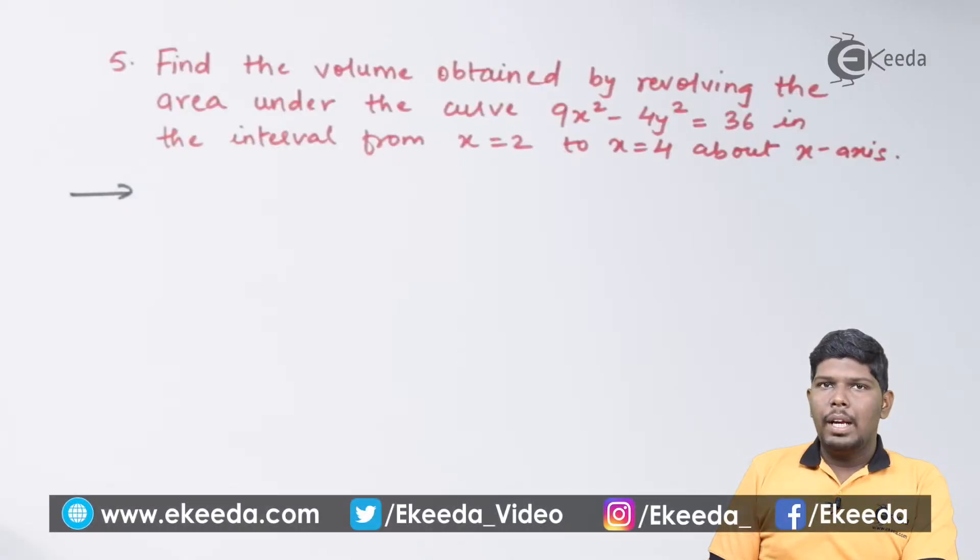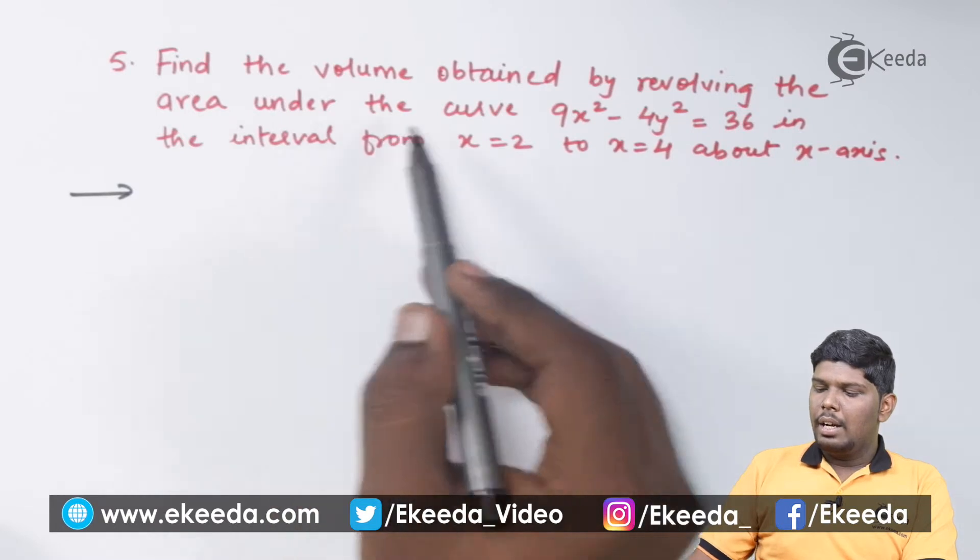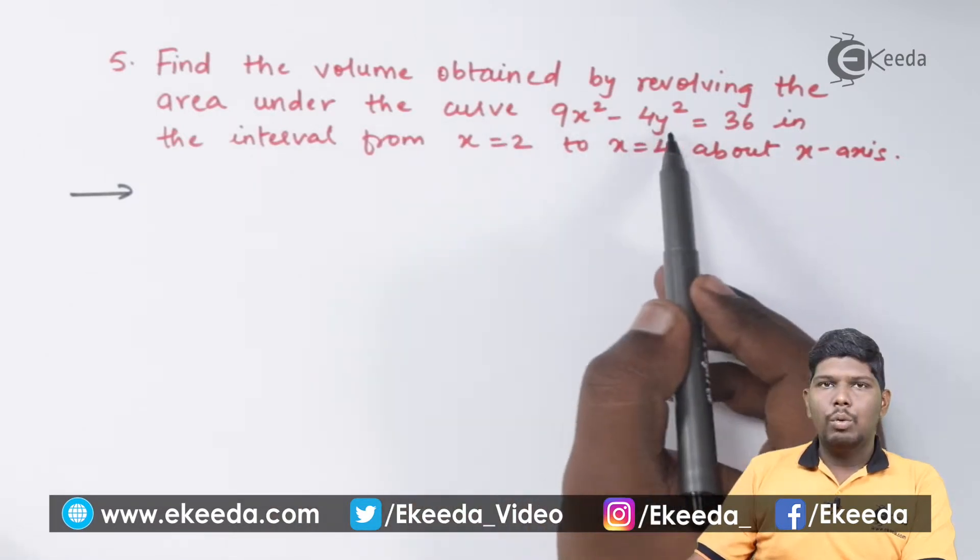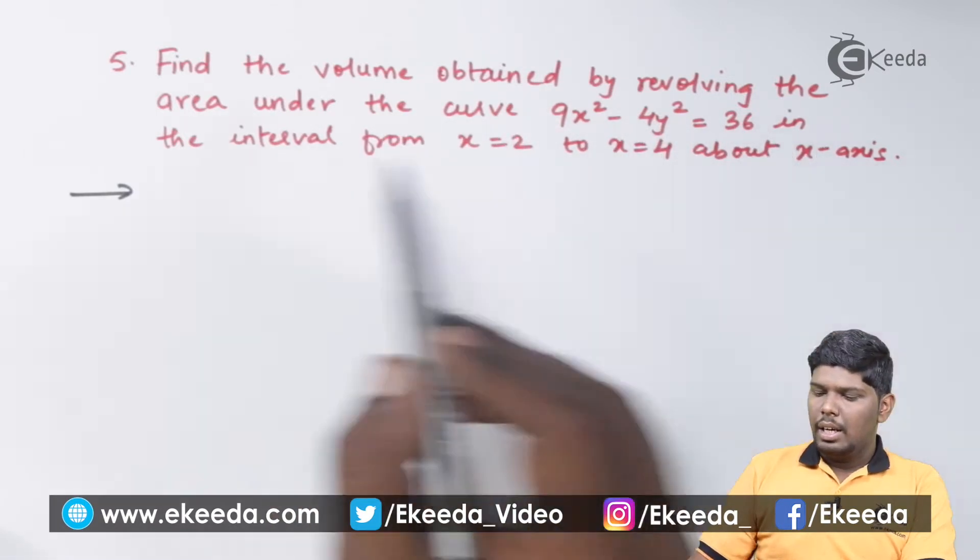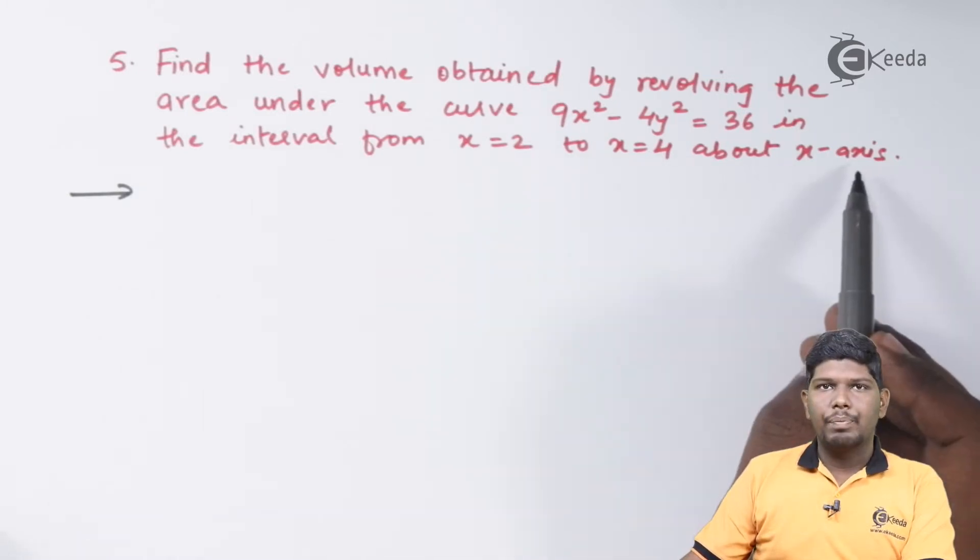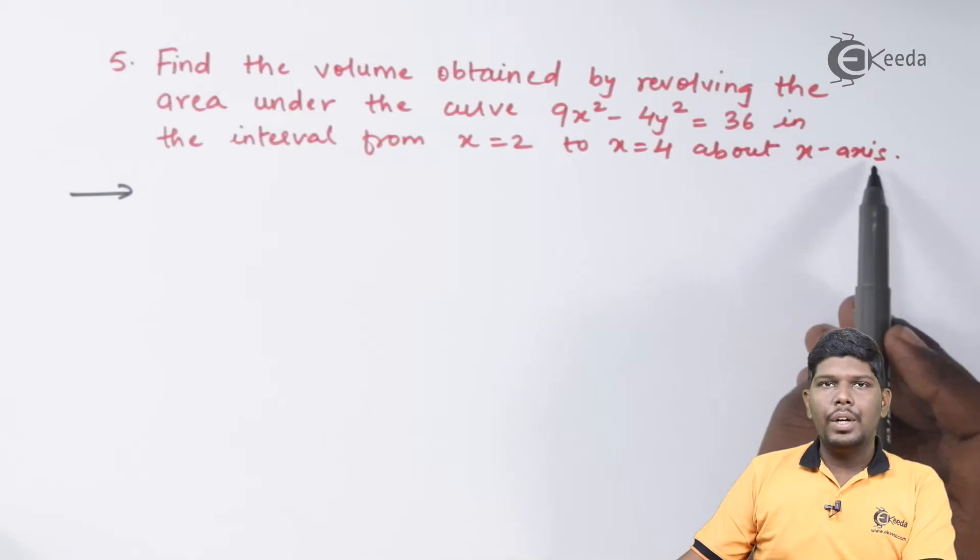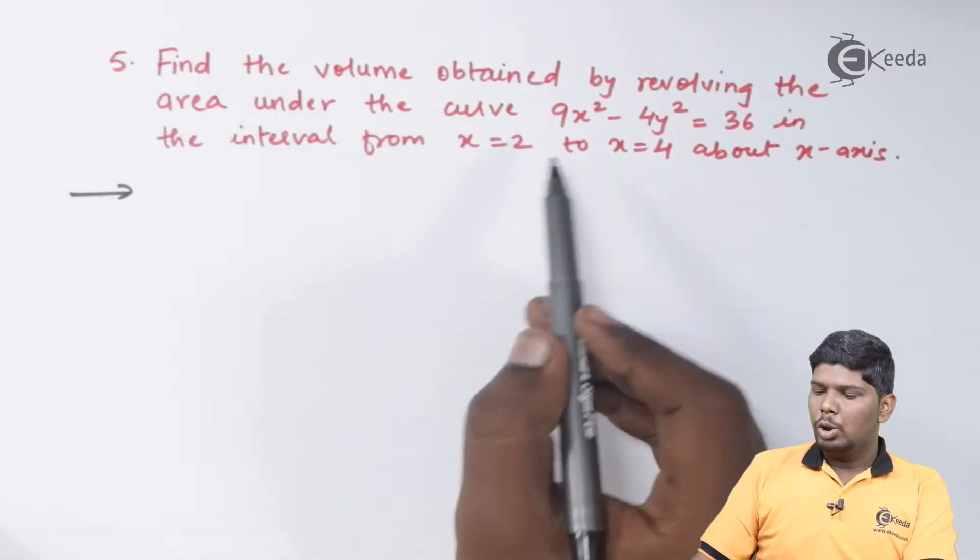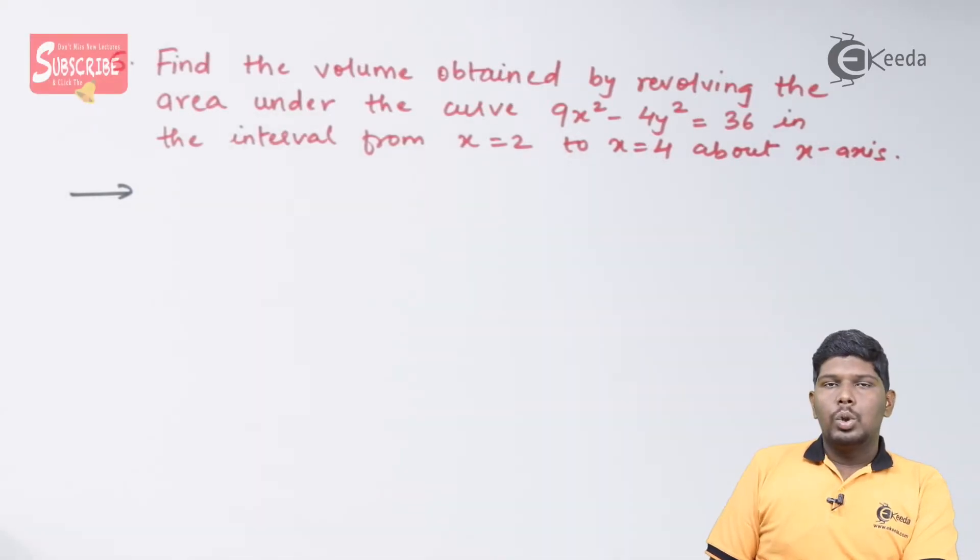Find the volume obtained by revolving the area under the curve 9x² - 4y² = 36 in the interval from x = 2 to x = 4 about the x-axis. Here you can see we need to revolve it around x-axis and also the limits of x are given, so the formula for volume will be π times integral y² dx.